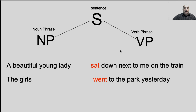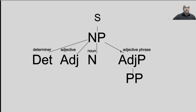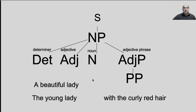Let's take a closer look at a noun phrase. A noun phrase can be broken down into a variety of components — we're just going to look at some of the major ones here. A noun phrase can include a determiner, can include an adjective, can include a noun, and it could also include an adjective phrase. For example, "a beautiful lady" — "a" is going to be a determiner, "beautiful" is an adjective, and of course "lady" is a noun.